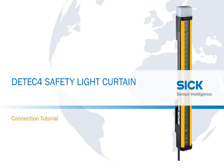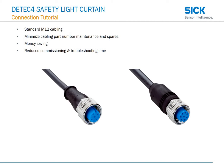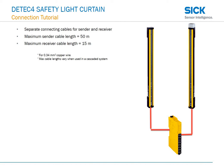Welcome back for another DTEC-4 safety light curtain tutorial. Today the topic will be connection of the device. As you may know, the DTEC-4 uses all standard M12 cabling, which is convenient for minimizing cable part numbers and spares. This will save money and reduce commissioning time. I'll be going through some basic connection scenarios with you.